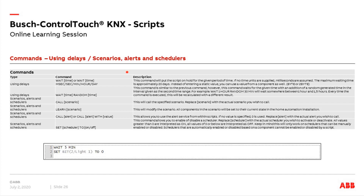Next, we have two delay functions. Scripts execute line by line — as soon as one line finishes, the next executes automatically. But in some use cases you may want to create a delay for a turn-on or turn-off command. The 'wait' function handles this. For example, waiting five minutes after leaving the house before turning off a light. We can also call scenes, override scenes with the 'learn scenario' function, call alarm functions from our Control Touch, and activate or deactivate time profiles.